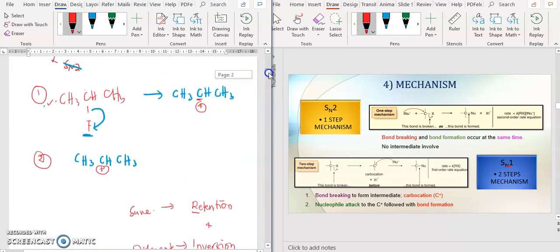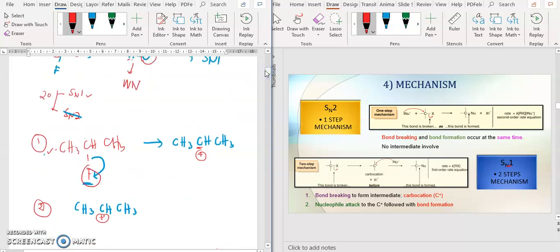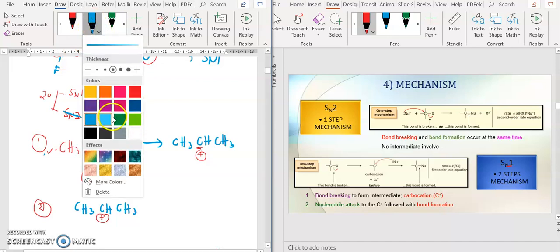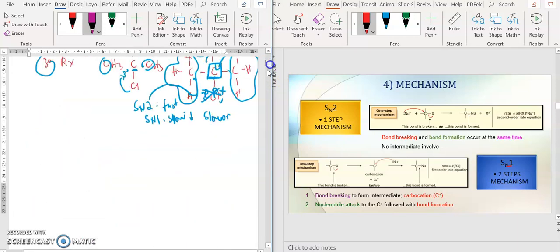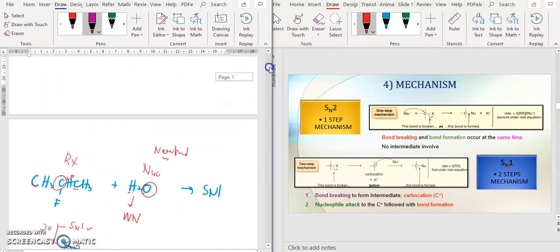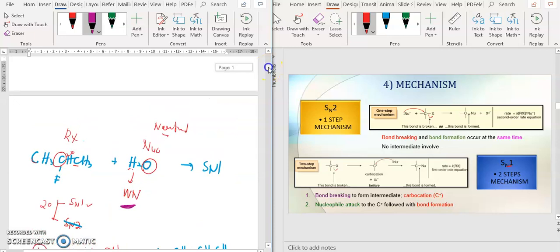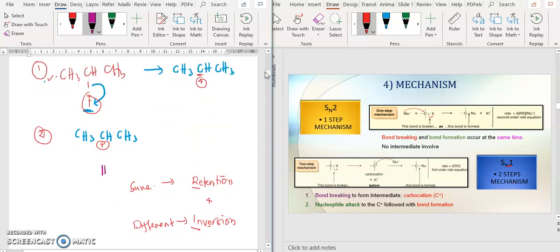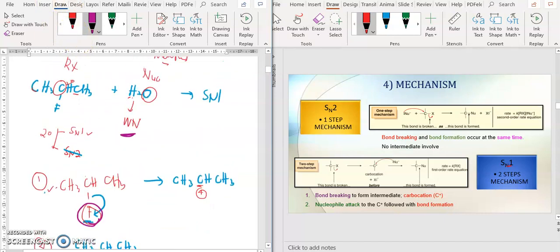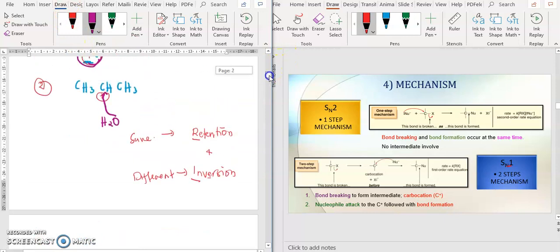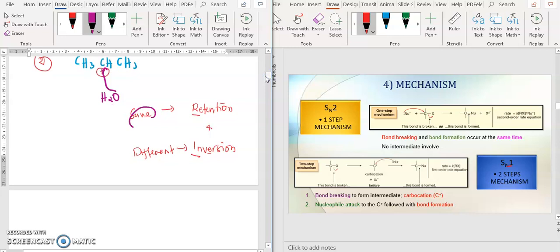Your X group located below, so meaning that your nucleophile - let me change color - your nucleophile is H2O. This is the nucleophile H2O. If you put mechanism, H2O attack from the same location with your F which is below. Attack here. It attacks the same place, so this is retention because same location.